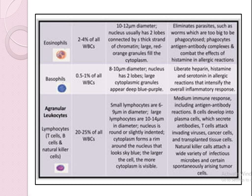Agranulocytes — the term means absence of small granules in their structure. For example, lymphocytes. These include T lymphocytes and B lymphocytes, which make up nearly 20 to 25 percent of all WBCs. They are involved in mediating immune responses, including antigen-antibody reactions.